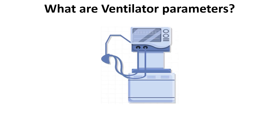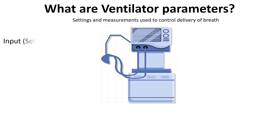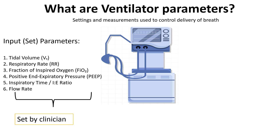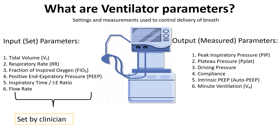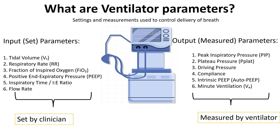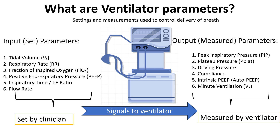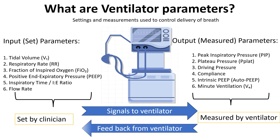Ventilator parameters are the settings and measurements used to control how a mechanical ventilator helps a patient breathe. Broadly, these parameters fall into two categories: the settings that the clinician sets, called input parameters, and the measurements the ventilator displays as it interacts with the patient, called output parameters. The inputs directly signal the ventilator to deliver the breath. The output parameters, reflecting the patient's response to ventilation, help assess the effectiveness of ventilation and guide necessary adjustments.